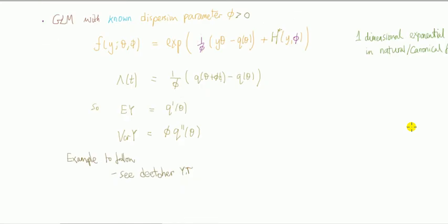For those of you studying the generalized linear models (GLM models)—that's a regression model—let's take a GLM where we have a known dispersion parameter phi, which is bigger than zero.